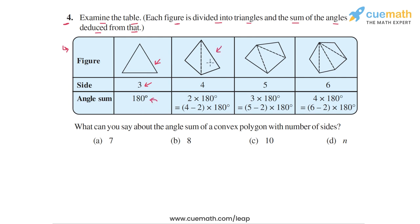Then we have a quadrilateral, which has been divided into two triangular parts by drawing a diagonal, and the sum of the angles is taken as 2 into 180 degrees because we have two triangles. Then we have a pentagon divided into three triangular parts by drawing two diagonals, so the angle sum is 3 into 180 degrees. Then we have a hexagon divided into four triangular parts by drawing three diagonals, so the angle sum is 4 into 180 degrees.